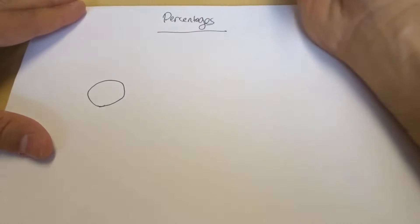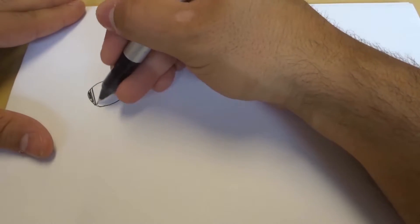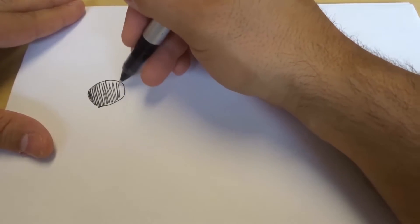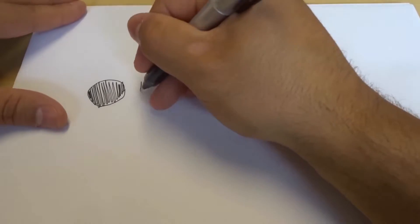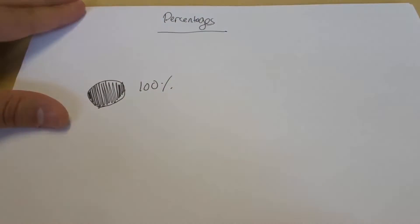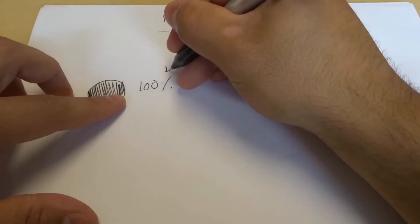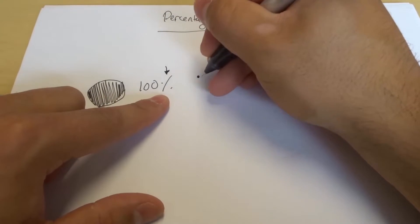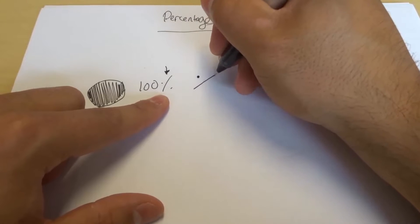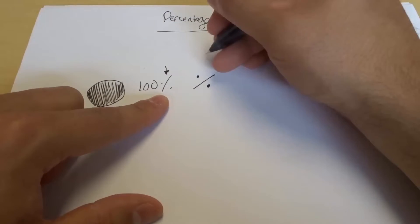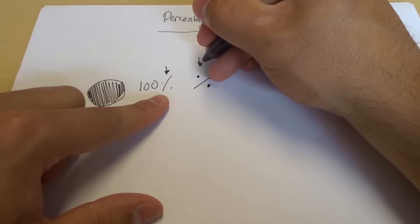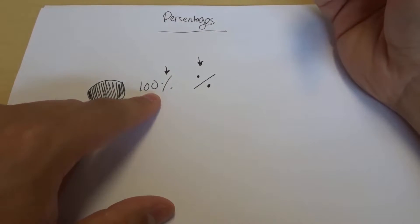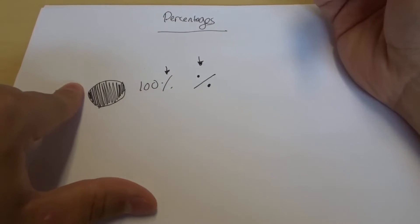If you can imagine that we have a pie, and we have all of the pie, we have the entire pie, that is 100%. So this right here, this symbol, is actually the percent symbol. It's just a dot, followed by a little slash, and then another dot. That is the symbol that means percent. And when you have 100%, that means you have the whole thing.